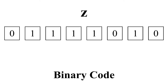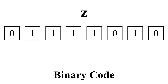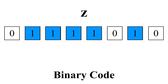This is the letter Z — lowercase z — in binary code: 0, 1, 1, 1, 1, 0, 1, 0. The ones are in the second, third, fourth, fifth, and seventh spot of the sequence.